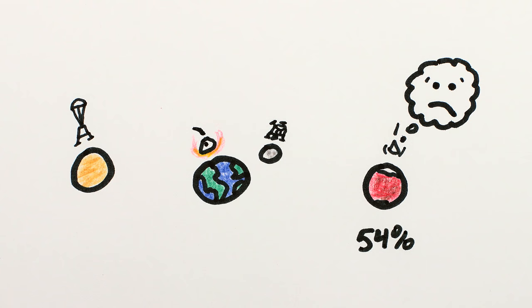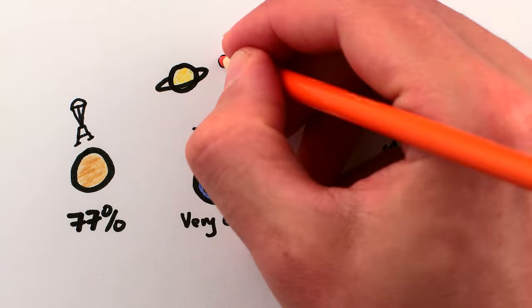There's a lower success rate landing on Mars than on Venus, the moon, the Earth, even Saturn's moon Titan.